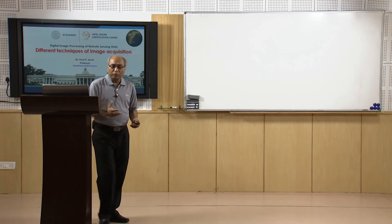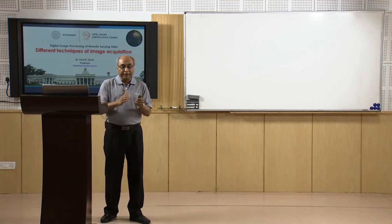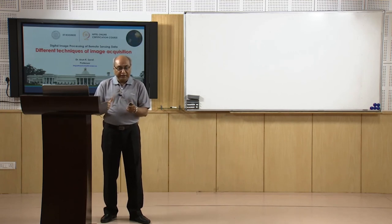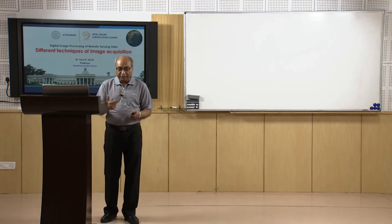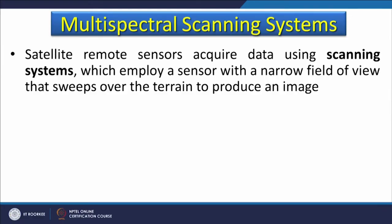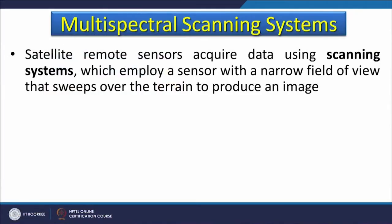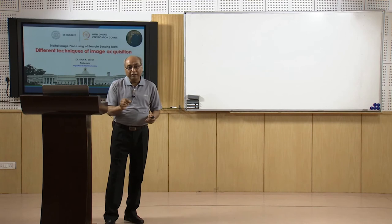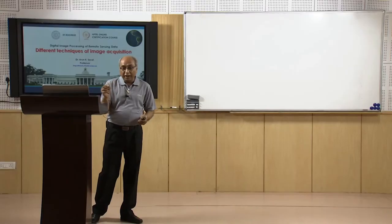The most common passive remote sensing technique is multispectral scanning — within a single sensor you have different bands covering different parts of the EM spectrum, with different bandwidths, all in one sensor on board a single satellite. This is why we call it a multispectral scanner. Satellite remote sensors acquire data using scanning systems, not snapshots like INSAT 3D. These are scanning systems with a narrow field of view (IFOV) that sweeps over the terrain to produce an image recorded line by line, pixel by pixel.